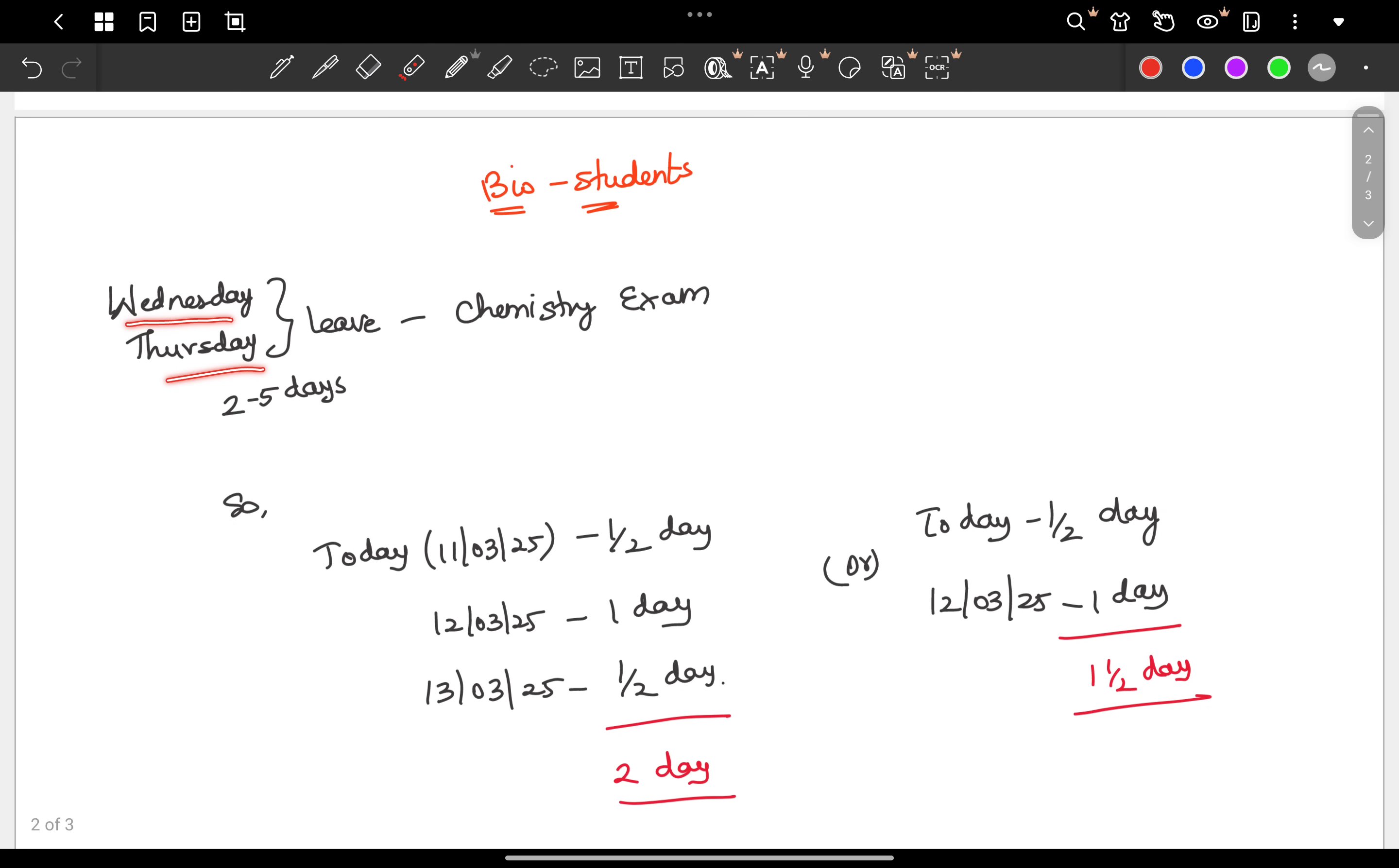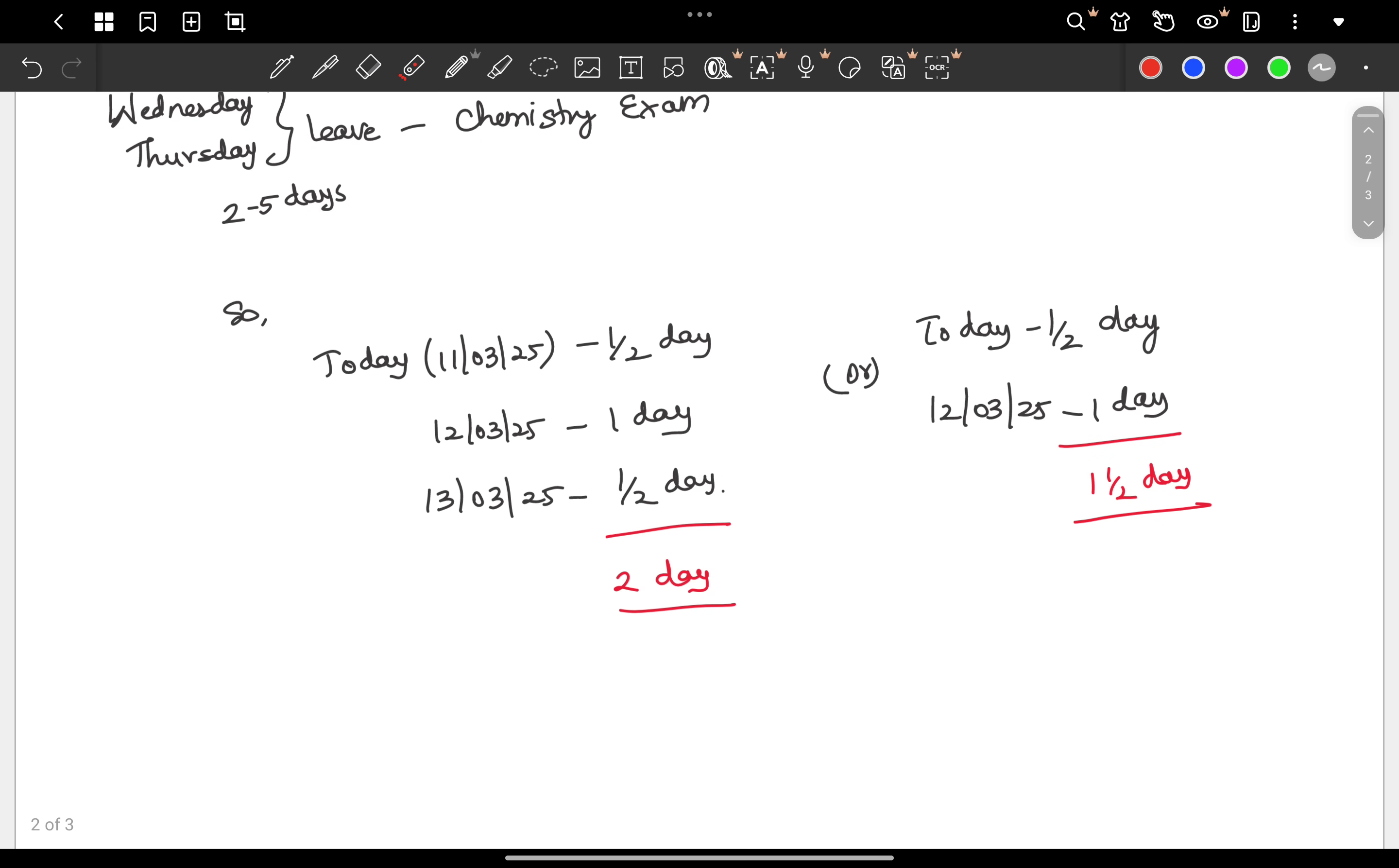So Wednesday, Thursday we are going to leave the next week. So 2.5 days leave, that is why it will not be efficient. So what do you do? 2 days. Now in this biology leave 2 days you have chemistry. No, at least 1 day.